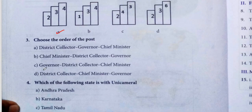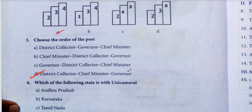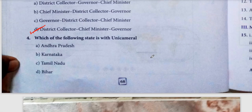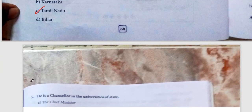Next, choose the order of the post. District Collector is the smallest post, then comes Chief Minister, and above that is the Governor. Next, which of the following states has a Unicameral legislature? Tamil Nadu and Kerala — many states have Unicameral. Madhya Pradesh has Marri.